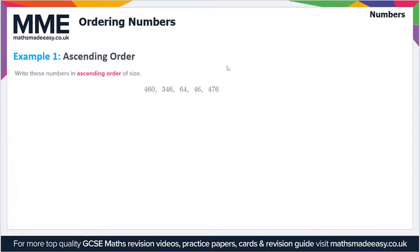We've got 460, 346, 64, 46, and 476. There are two two-digit numbers here, so let's cross out the three-digit numbers. We've got 64 and 46. Looking at the first digits of both, we can see that 46 is the smaller number, so we get 46 then 64.